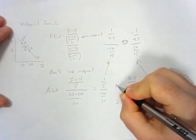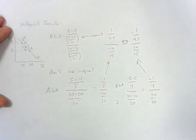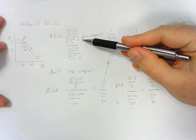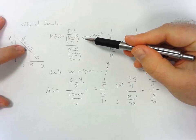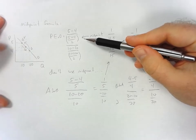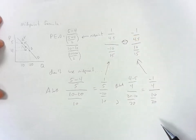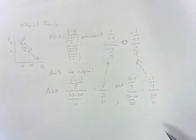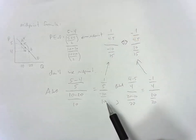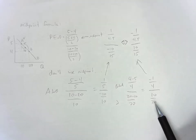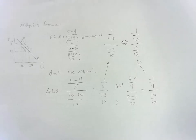So the reason we use the midpoint formula — even though it gives us extra math — is that we're using the average point between our two values. Regardless of the direction we move, we get the same elasticity value, instead of getting different answers depending on whether we start from A or from B.